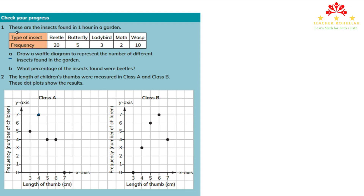The first question says: these are the insects found in one hour in a garden. We have types of insects and the frequency — how many times they are found. We have beetle found 20 times, butterfly found 5 times, ladybird 3 times, moth 2 times, and wasp 10 times.